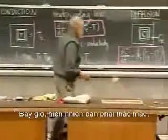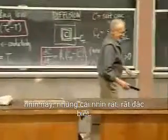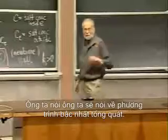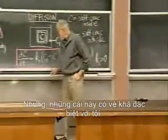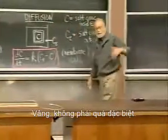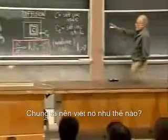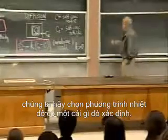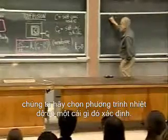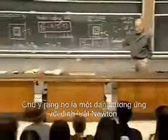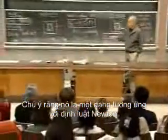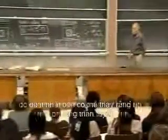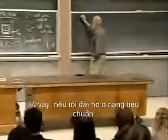Now, you obviously must be wondering: these look very, very special. He said he was going to talk about the general first-order equation, but these look rather special. Well, not too special. How should we write it? Let's take the temperature equation just to have something definite. Notice that it's in a form corresponding to Newton's law, but it is not in the standard linear form. Let's put it in standard linear form so at least you can see that it's a linear equation.